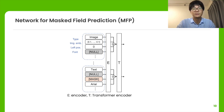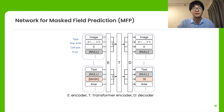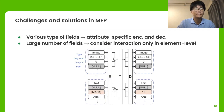Next, we use standard transformer encoder blocks to consider element-level interaction. Finally, element-level features are decoded back to each field by an attribute-specific decoder. This network architecture is designed to address the challenges mentioned earlier.